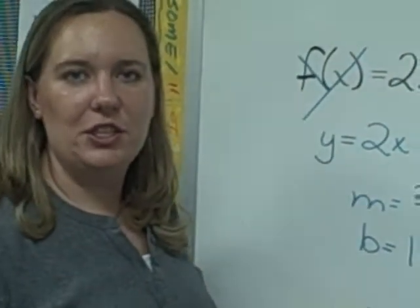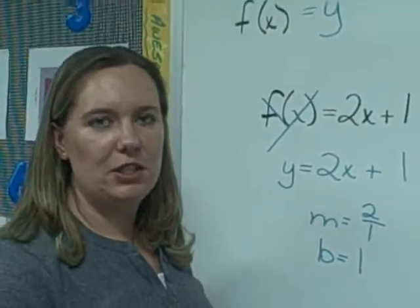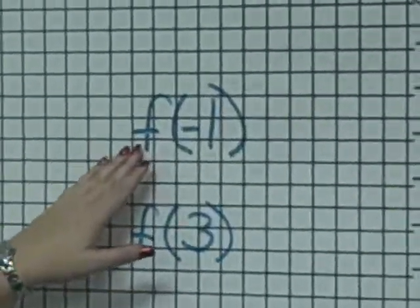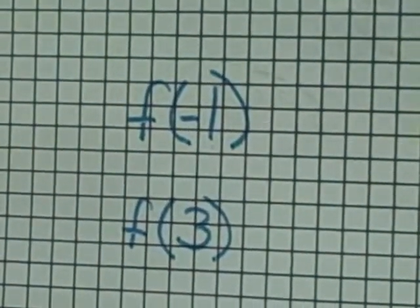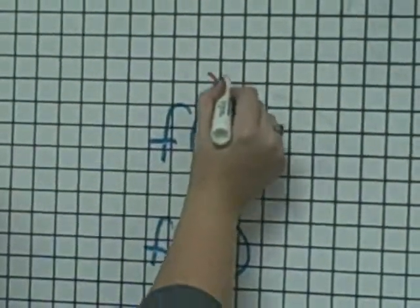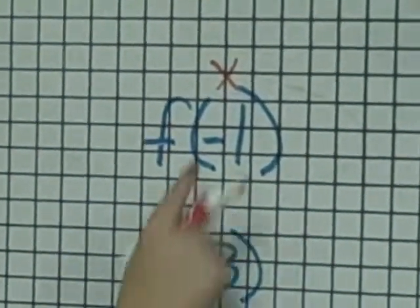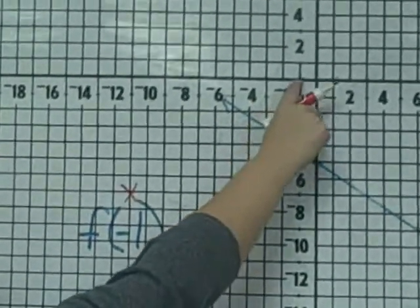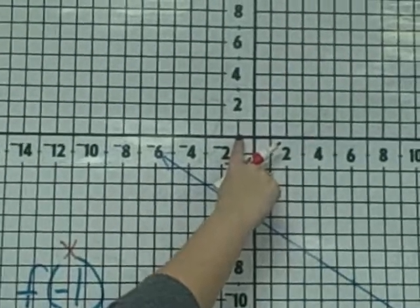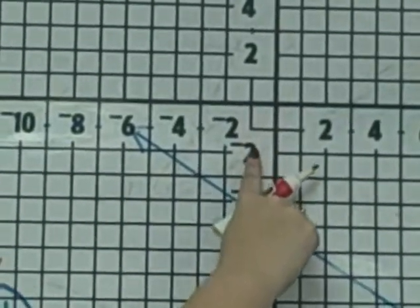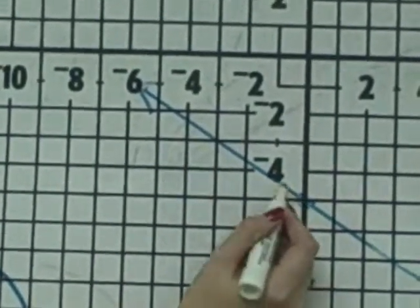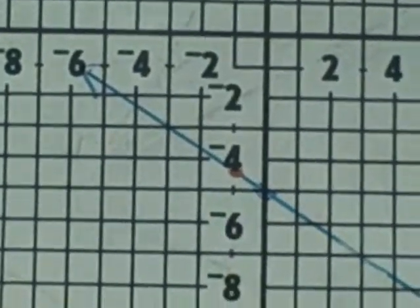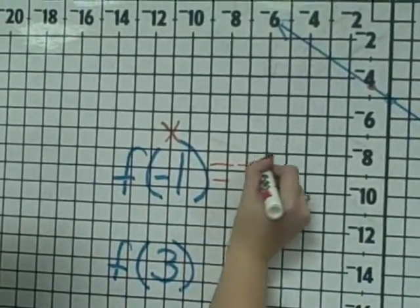That's one way you're going to see function notation. You may also see function notation on a graph like we have over here. If you see f of negative 1, that negative 1 is in the same place that the x normally resides inside the parenthesis. So you're going to go to your x-axis at negative 1, which would be right up here. We're going to come down to the y, and we can see that it's right here between negative 4 and negative 5. So f of negative 1 would equal negative 4.5.